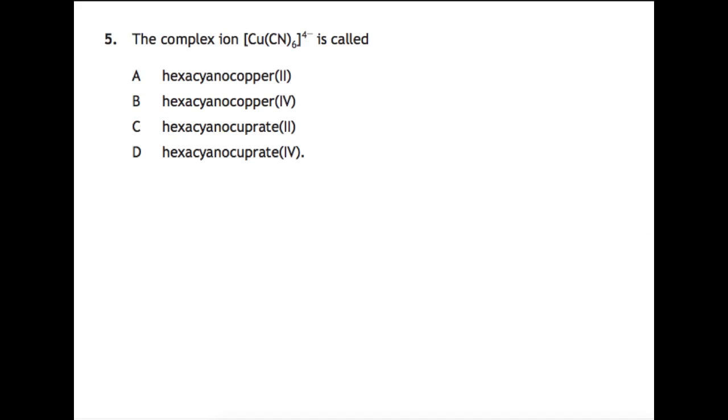Question 5: naming this complex here. We know that the ligands always go first. This is a cyano ligand and we have six, so it's hexa. Each of your cyano ligands is worth one minus, so you have six minus here. Overall the whole thing is four minus, so your copper must be two plus. That means you put in brackets a two after the copper. So you've only got a choice now between A and C. The complex itself is a minus, which means that we change it to the Latin name cuprate and put the -ate on the end. So the answer to this one was C.